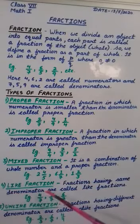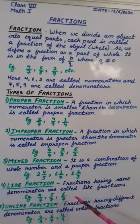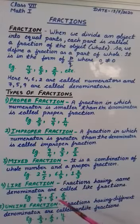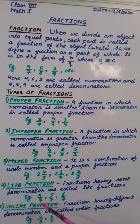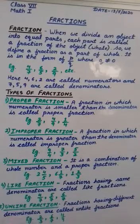Coming to the next one: like fractions. Fractions having the same denominator are called like fractions. For example: 4 by 7, 5 by 7, 6 by 7. In all these fractions the denominator is the same — it is 7. That's why they all are like fractions.